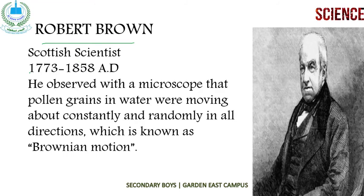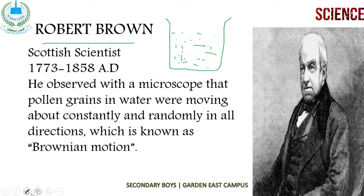Number four is Robert Brown. He was a Scottish scientist who worked during 1773 to 1858 AD. He observed with a microscope that pollen grains in water were moving about constantly and randomly in all directions. He took water in a container and put some pollen grains into it — the blue color shown here represents the pollen grains — and he observed that after some time the pollen grains started moving in random directions continuously.